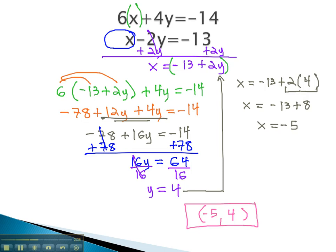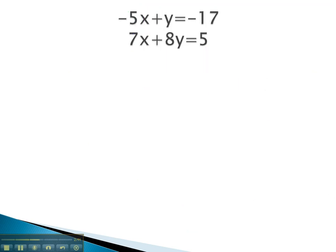Let's try another example where we must first isolate a variable before we're allowed to make our substitution. Here, we have a lone variable, y. It is not isolated because it has the negative 5x. We can add 5x to both sides to get that variable alone. We now know y is equal to negative 17 plus 5x.